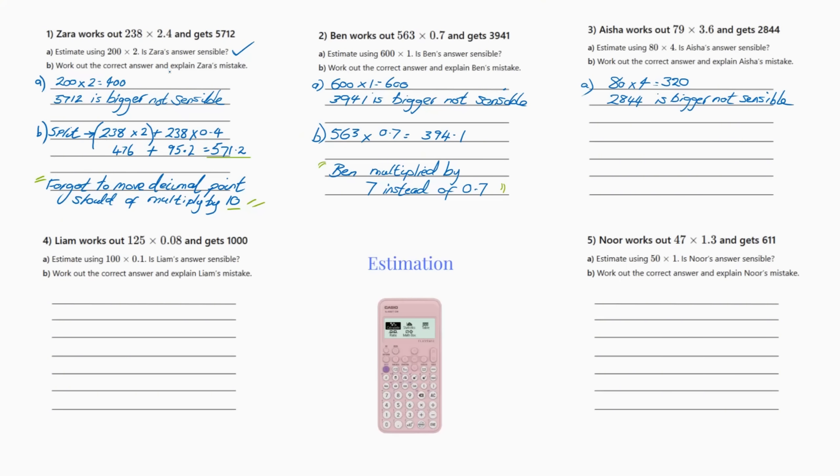So I've split it up and I've done 238 times 2 and then I've done 238 times 0.4. So all I've done is I've split up this 238. Now that comes to 476 and 95.2, so I've added them all up and it comes to 571.2. Now that is the correct answer.